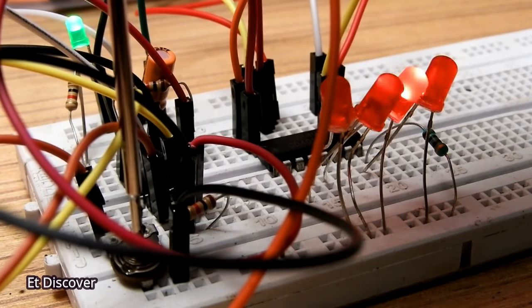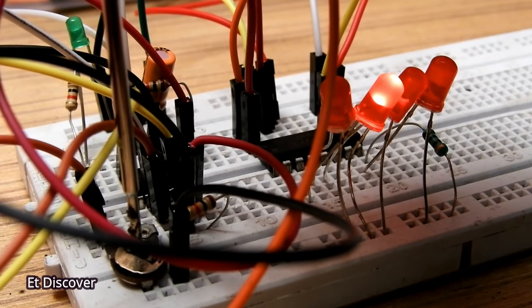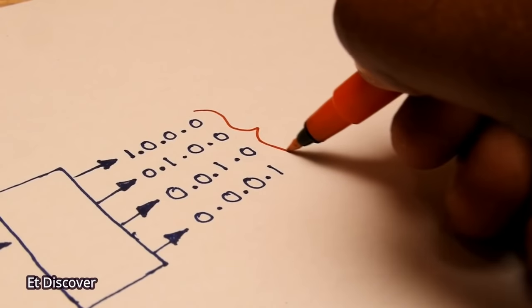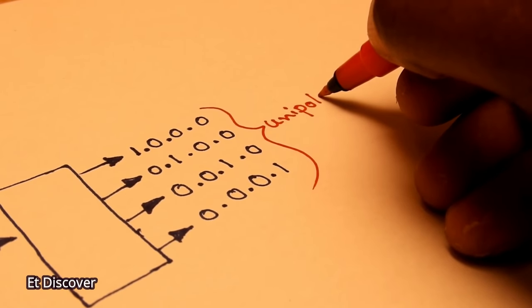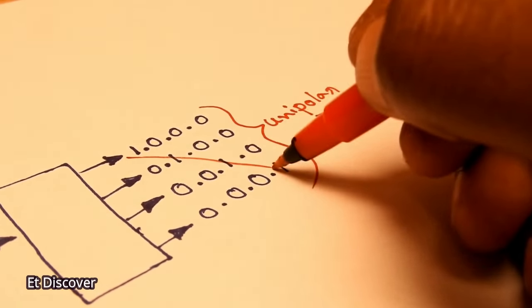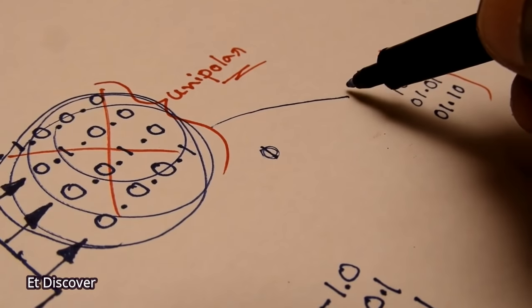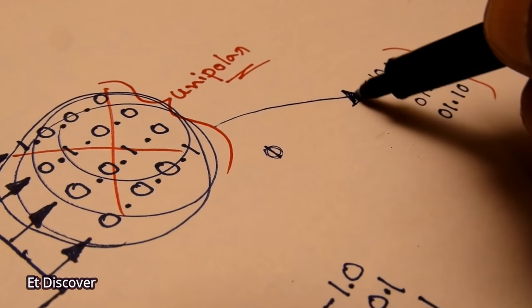So the circuit is complete. As you can see the four signals. But here is a little problem. This type of sequence is good for unipolar stepper motors. Let's see how unipolar and bipolar sequences work together.